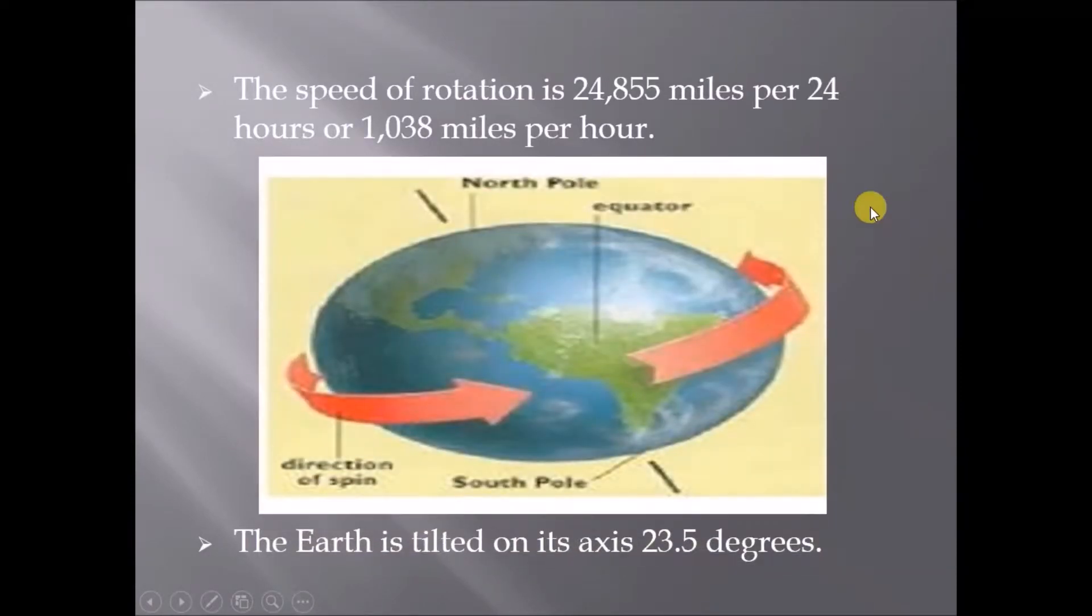The speed of rotation is 24,855 miles per 24 hours, or 1,038 miles per hour. The Earth is tilted on its axis at 23.5 degrees.